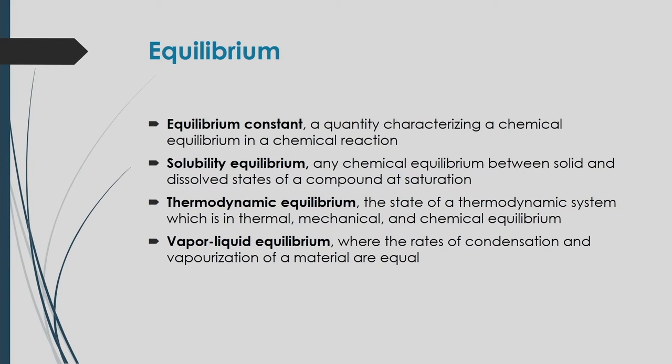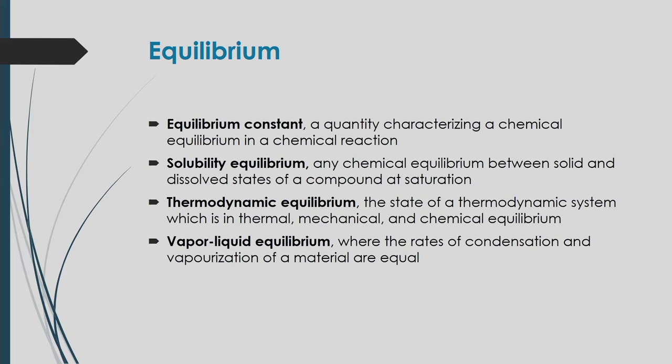Whenever liquid converts to vapor, there is a certain equilibrium condition at a certain temperature and pressure — this is vapor-liquid equilibrium. The vaporization process converts liquid to vapor, while condensation converts vapor to liquid. When the rates of condensation and vaporization are equal, equilibrium exists between the vapor and liquid, and that is called vapor-liquid equilibrium.